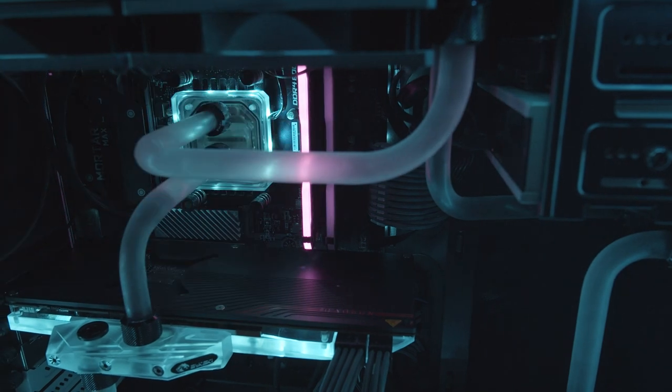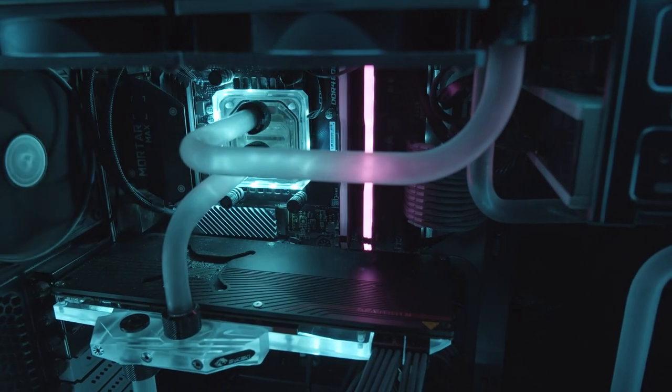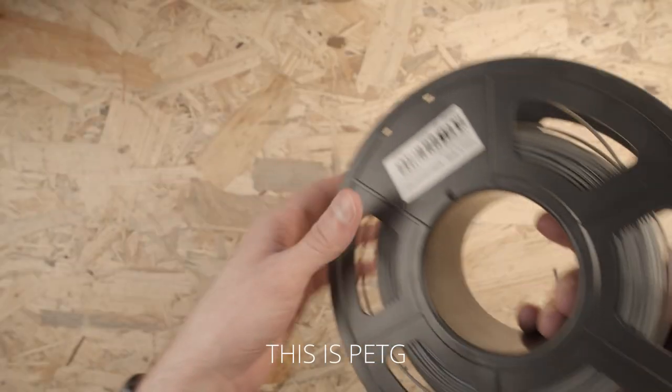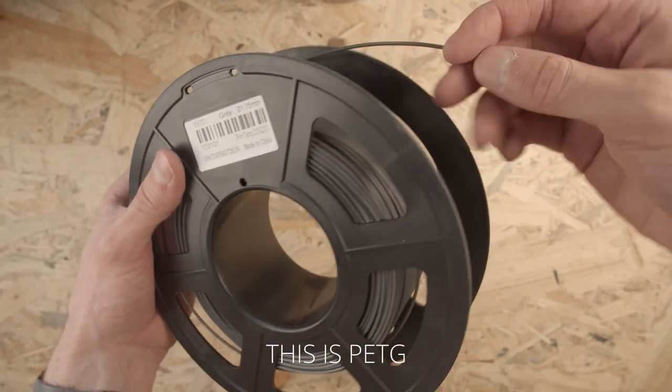Water cooling parts do two things. They transfer heat, or they transport water. 3D printing, at least the kind that you can do at home, uses plastic, which is really bad at transferring heat.